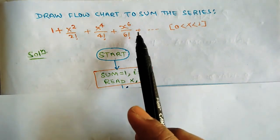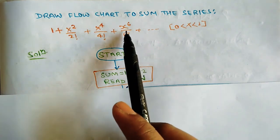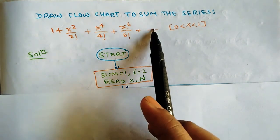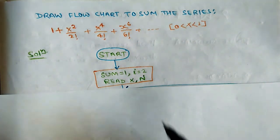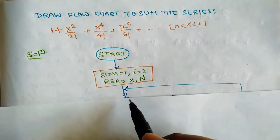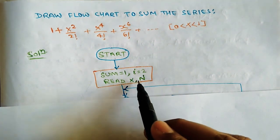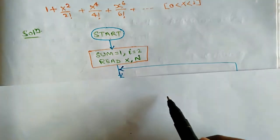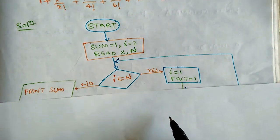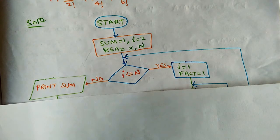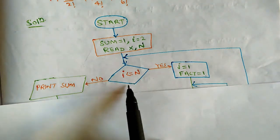The user will also input n, indicating up to which iteration we have to sum — for example, up to the 6th or 8th position and so on. Now we take input, and then we check the condition: is i less than or equal to n? This condition is very important because if it is true, we have to find out the factorial.